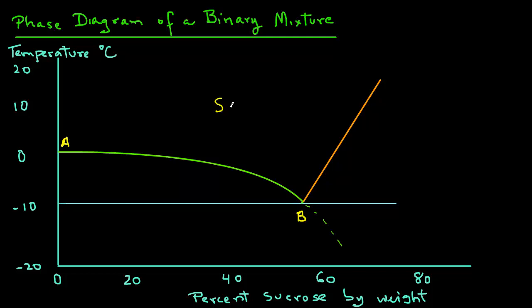This region above is for the solution. Remember, our solution is water and sucrose. Under this curve is the mixture of solution and the solid phase of the component that is present in excess in the solution. The solution is water and sucrose, so the excess phase is water. The solid phase of water is ice. So we have solution plus ice. The curve A-B is called the freezing point curve. This curve separates the solution from the mixture of solution plus ice. At any point on this curve, the solution is at its freezing point.